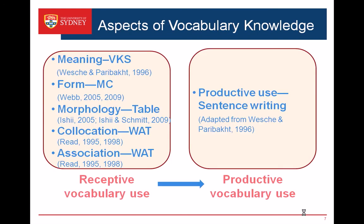Here are the aspects measured in the test instruments. The meaning aspect was captured by a revised vocabulary knowledge scale. A multiple choice task captured form understanding, requiring students to choose the correctly spelled word from three distractors. Morphology was captured by a table task eliciting students' knowledge of word class, where students wrote out other word classes of the target words. Reed's word association test was used to capture collocation and association knowledge. Productive use was captured by a sentence writing task where students wrote more than two sentences, one including the target word, with the additional sentence showing appropriate contextual use.